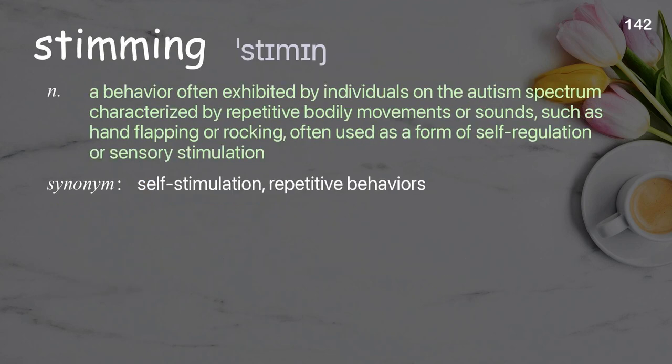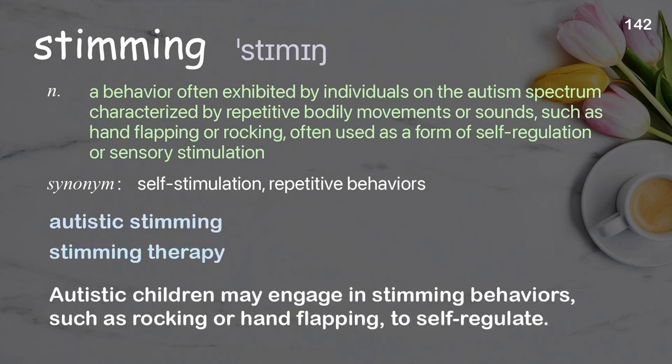Stimming: a behavior often exhibited by individuals on the autism spectrum, characterized by repetitive bodily movements or sounds, such as hand flapping or rocking, often used as a form of self-regulation or sensory stimulation. Examples: autistic stimming, stimming therapy. Autistic children may engage in stimming behaviors, such as rocking or hand flapping, to self-regulate.